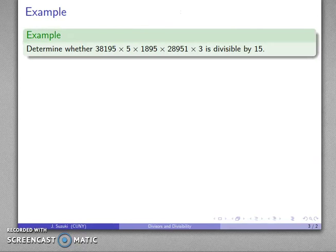For example, here's a nice simple problem. Determine whether 38,195 times 5 times 1,895 times 28,951 times 3 is divisible by 15. And so here's the hardest way possible to do this problem.